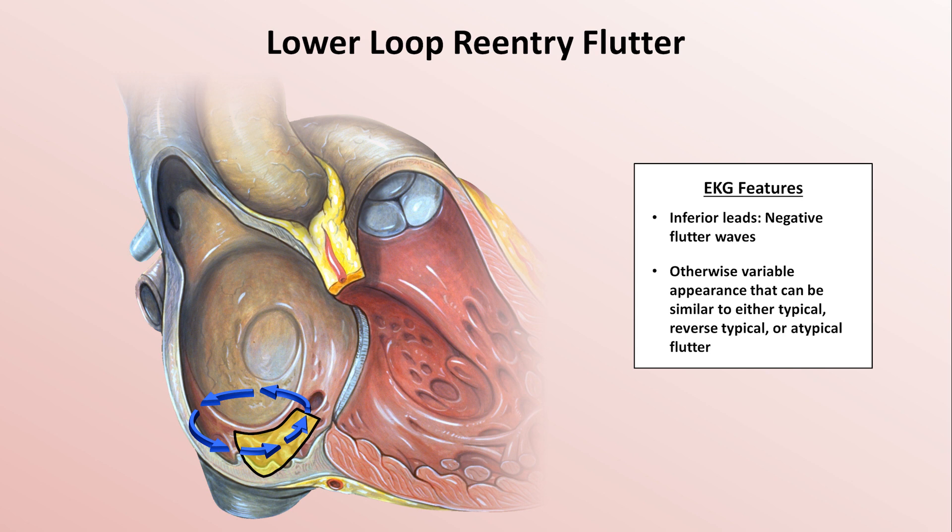A quick note about terminology: while the term 'typical flutter' is reserved for the flutter circuit that encircles the tricuspid annulus, the term 'atypical flutter' is usually reserved for isthmus-independent flutter. This makes lower loop flutter and a few other rarer variants neither typical nor atypical.